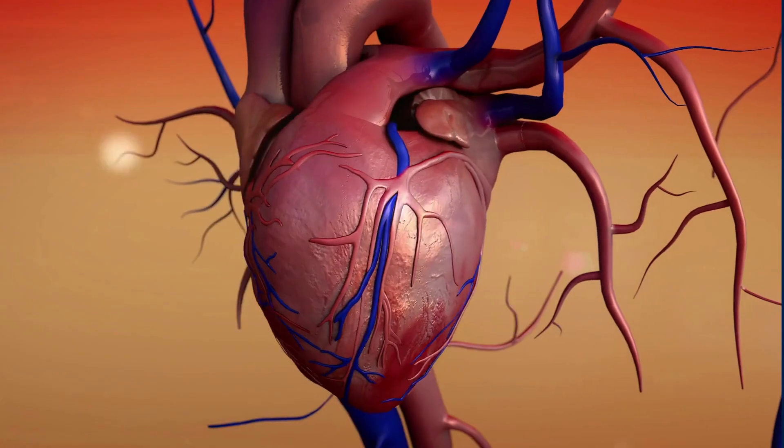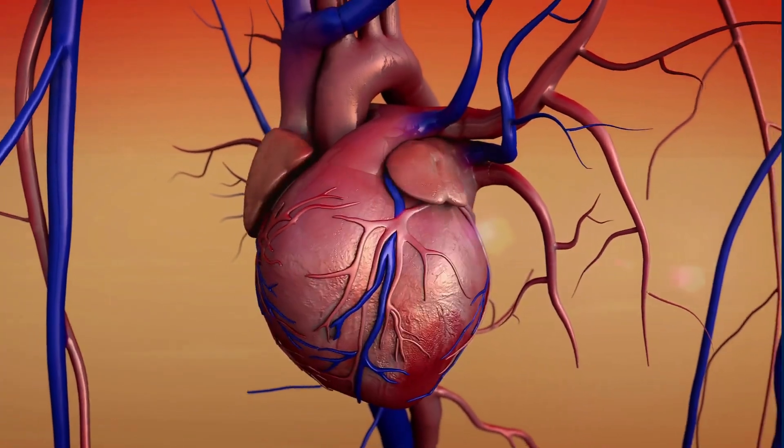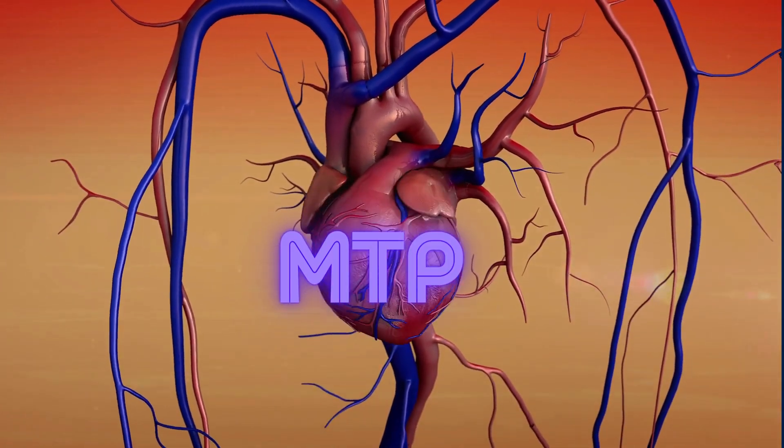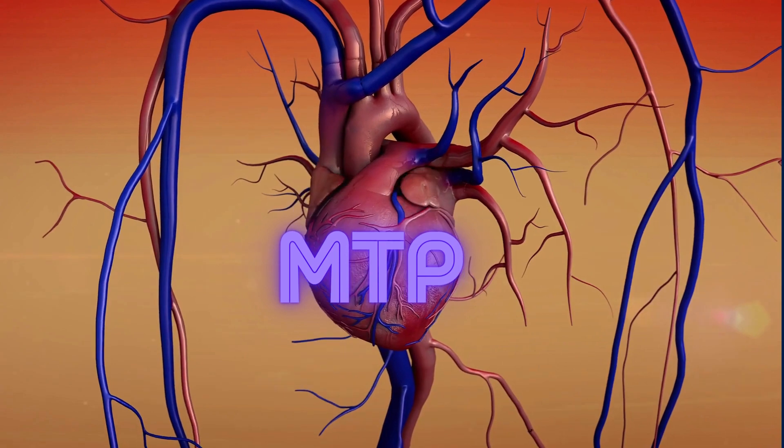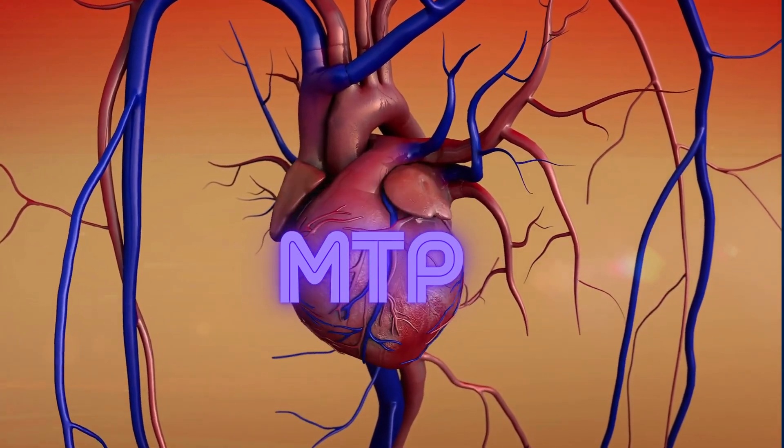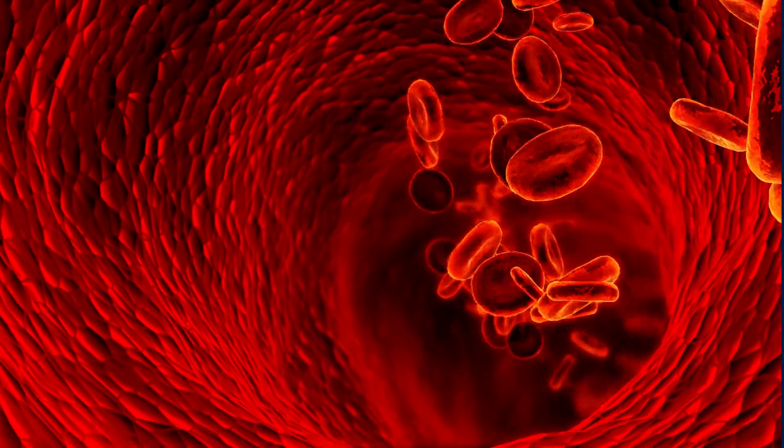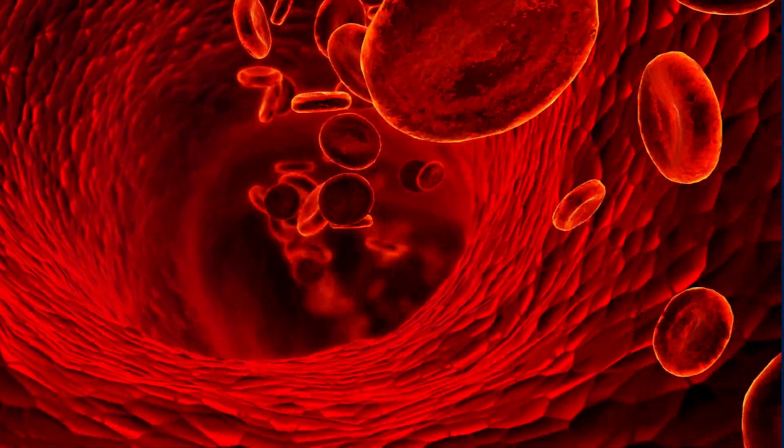Imagine a heart in a body. The heart is the MTP, or Massive Transformative Purpose. This is the big, bold goal that gets everyone excited and gives the exponential organization its direction. It's like the heart pumping blood to the rest of the body, giving it life and purpose.